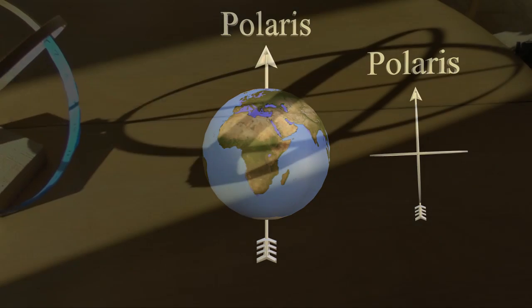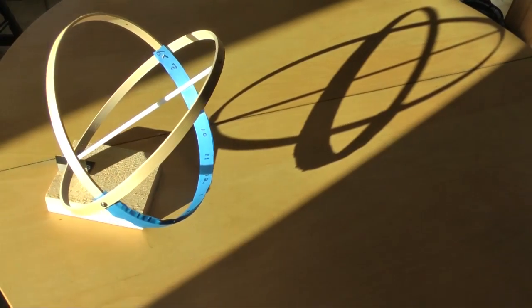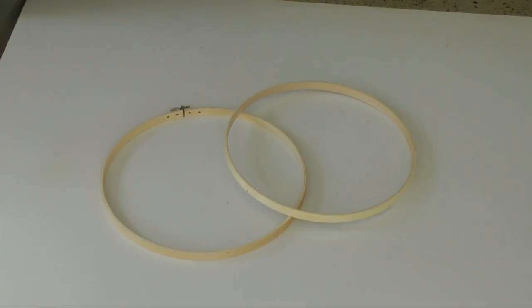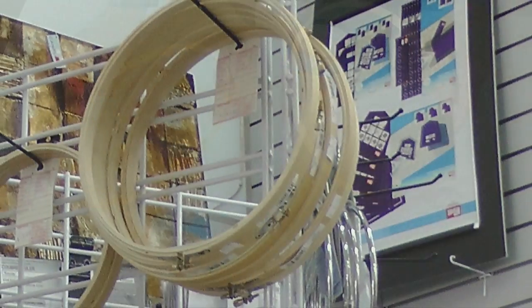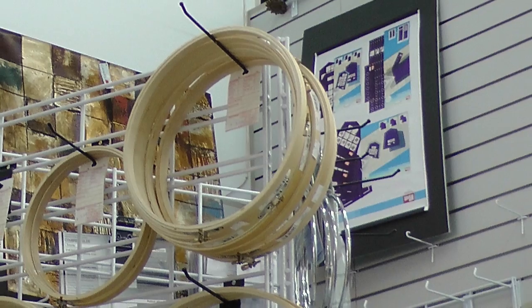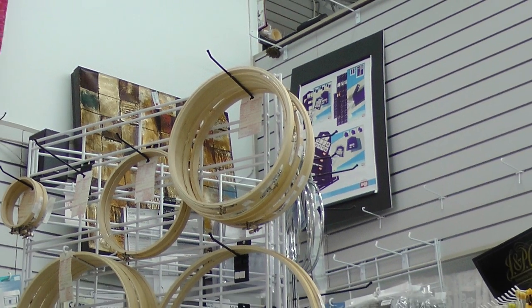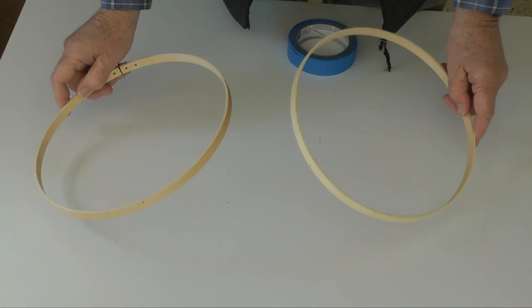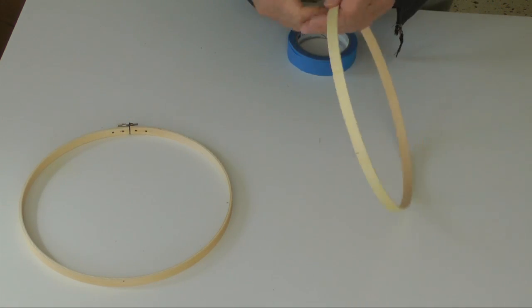Here's how to build an armillary sundial. We will need two concentric hoops. These are called embroidery hoops, used in needlework. These inexpensive hoops are available from crafter fabric stores and are ideal for this project. Any size will work. I'm using 10 inch or 25 centimeter diameter hoops.